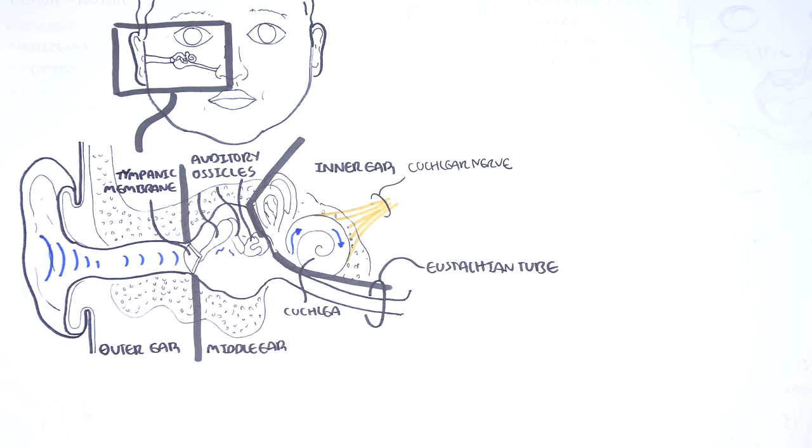The eustachian tube is the connection between the middle ear and the nasopharynx, or the nasal cavity.